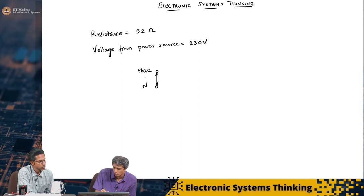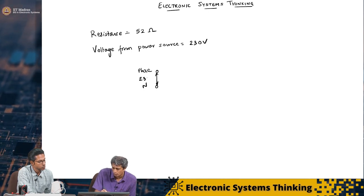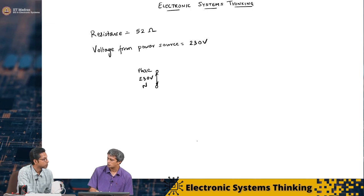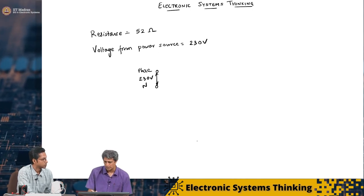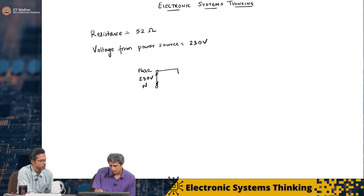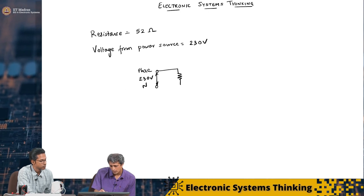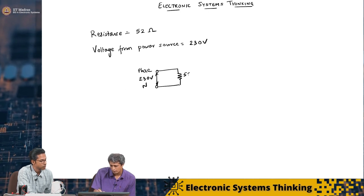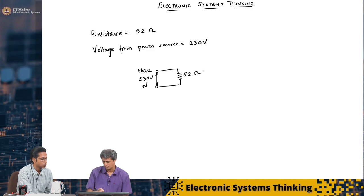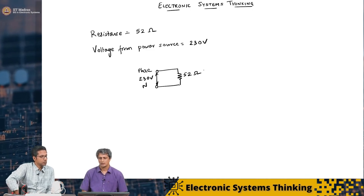Between these two nodes, we got 230 volts. And we also made a resistance measurement and we found that to be approximately 52 ohms.